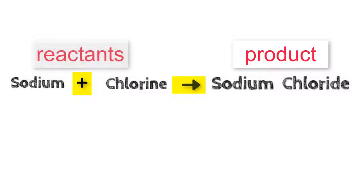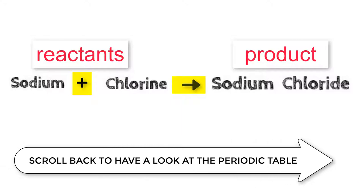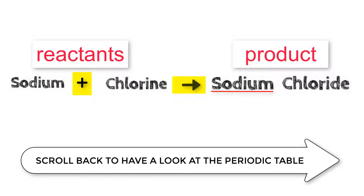Sodium plus chlorine produces sodium chloride. So what about the naming of the compound sodium chloride that is produced? Here's how it works. The element that is further to the left on the periodic table is written first. The element further to the right on the periodic table is written second.